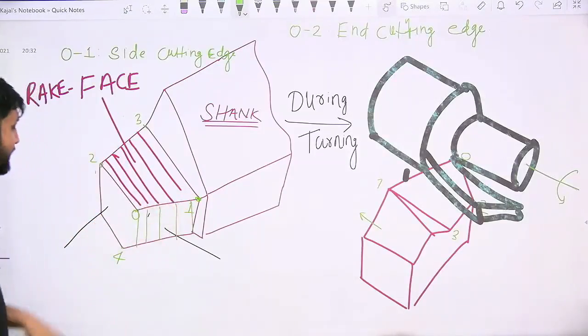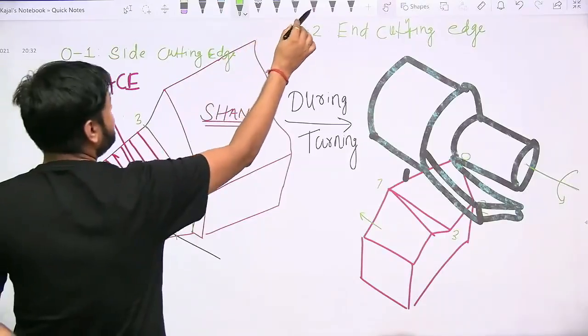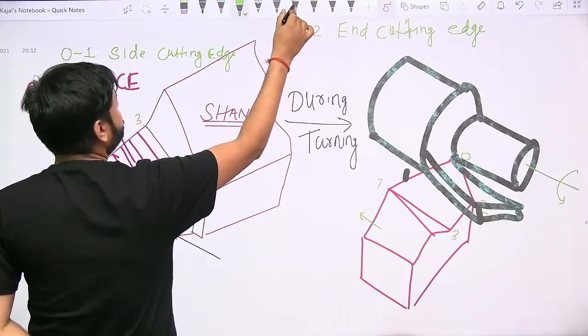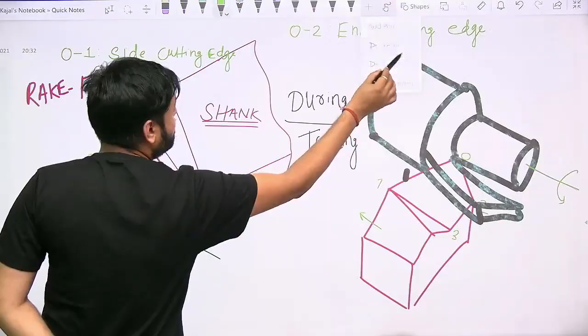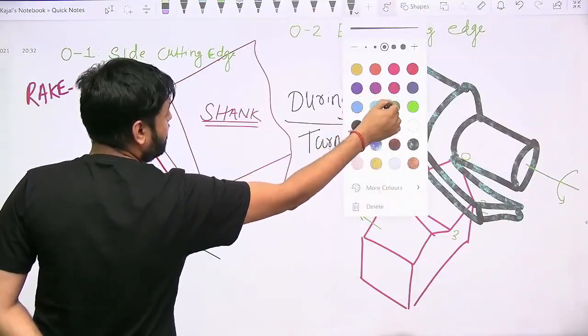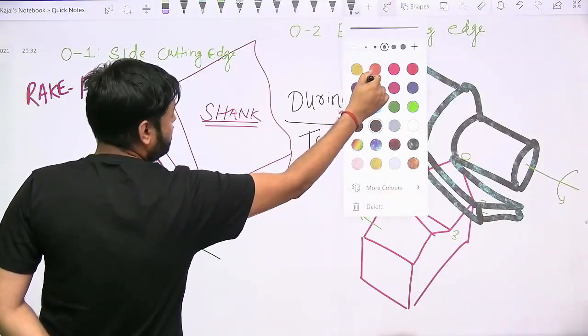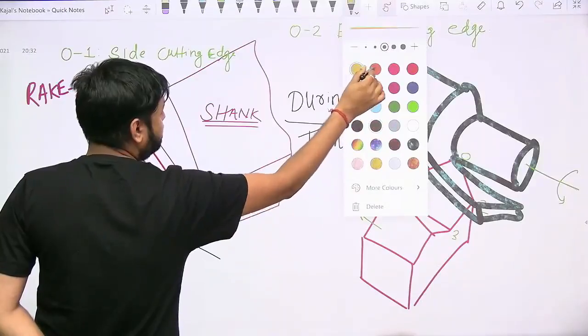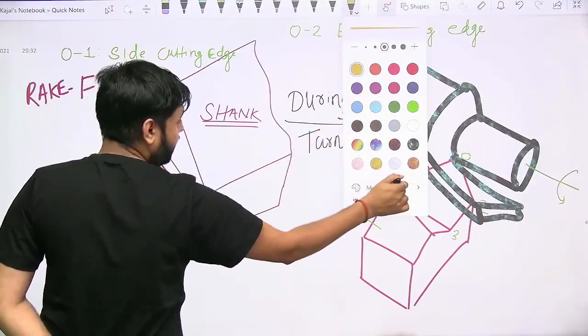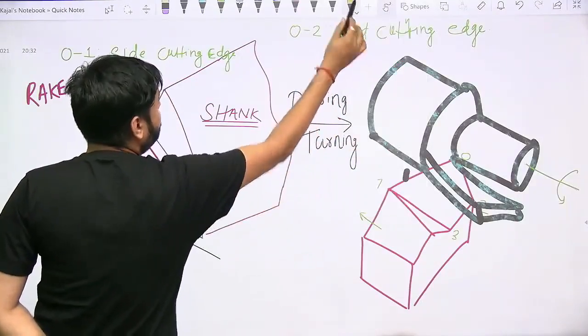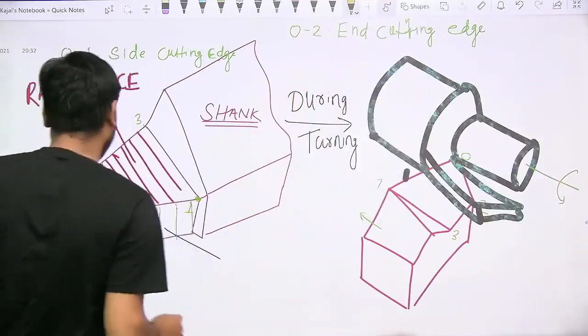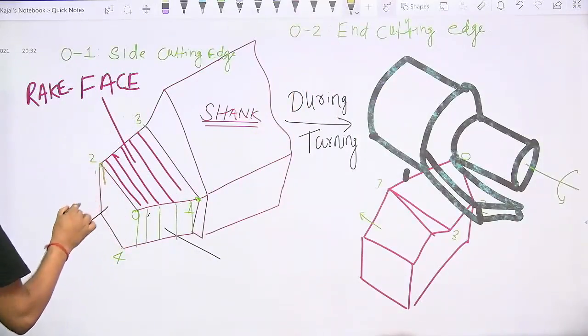Then you have another surface. Let me choose another color. If you observe, here as well there is one surface below the 02 cutting edge.